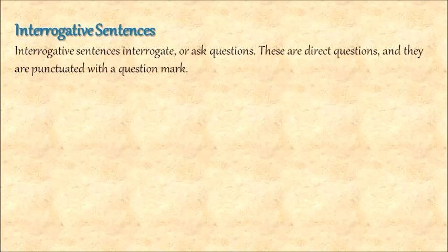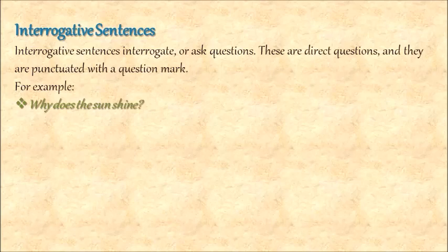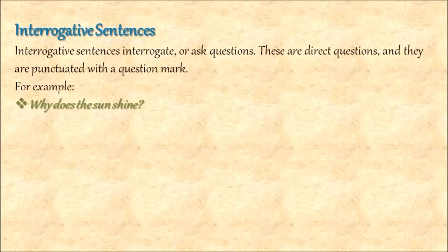Let's shift to the next type: interrogative sentences. An interrogative sentence interrogates — it asks questions. These are direct questions and they are punctuated with a question mark. Punctuation is very important because you must put the right punctuation mark for the right type of sentence in written form. Your intonation plays a role in spoken form. For example: why does the sun shine? Your intonation must sound like a question. So here you'd get the punctuation vocally, and for written forms, the question mark makes it vivid that this is an interrogative sentence.